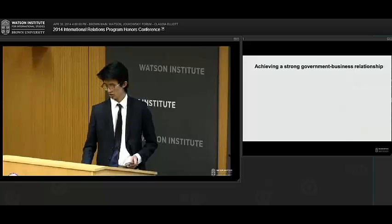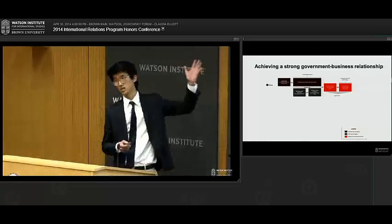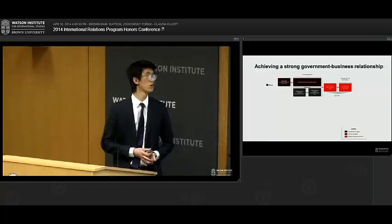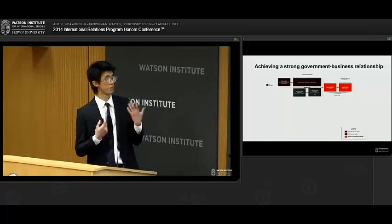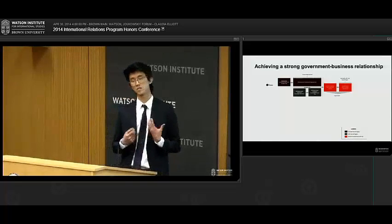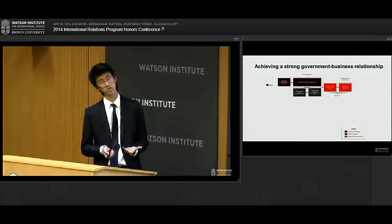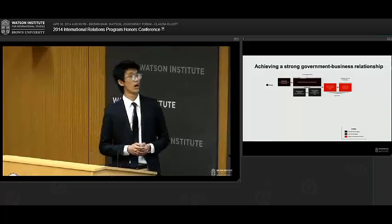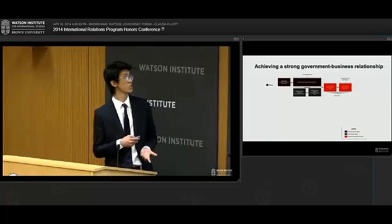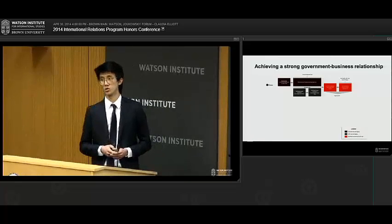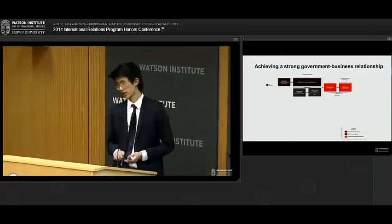For strong government business relationships, here you see Korea letting some of the businesses created under colonialism continue. So your big family conglomerates in Korea, some of them emerged under Japanese colonial rule, and it was in the interest of the state to allow them to continue, as well as to continue to support new emerging businesses under post-colonial rule, which led to a hybrid of post-colonial and colonial legacies.